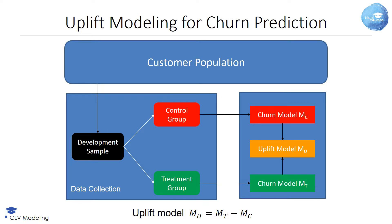A first, and rather straightforward and intuitive approach for developing uplift models is called the two-model approach, also referred to as the naive approach, difference-score method, or double-classifier approach. We start by drawing a sample from our entire customer population. We then split this up into a control group and a treatment group. The control group is not subject to the marketing retention campaign, while the treatment group represents the customers targeted with the retention campaign.